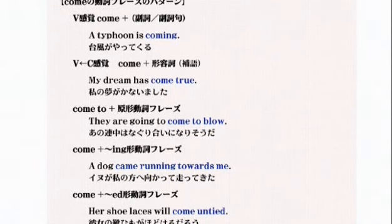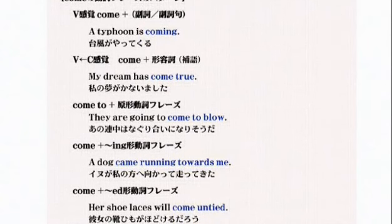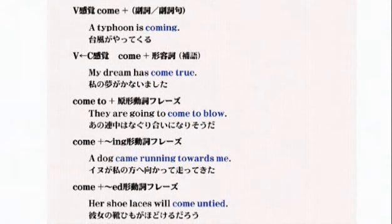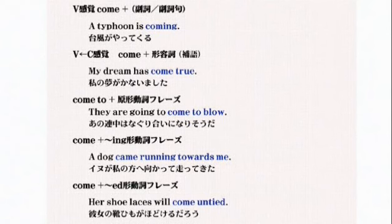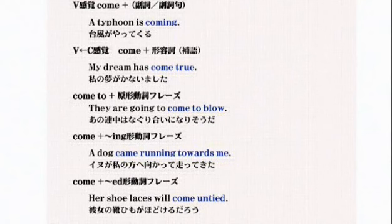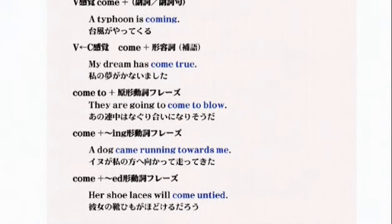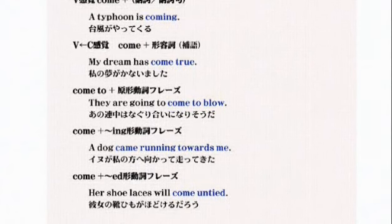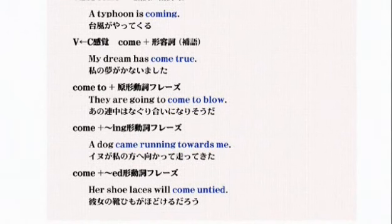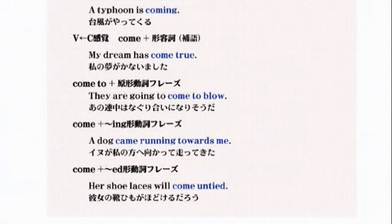comeの動詞フレーズのパターンを見ていただきましょう。come plus 副詞：「a typhoon is coming」現れてくる、やってくる。come plus 形容詞：「my dream has come true」私の夢が叶いました。「they are going to come to blows」殴り合いになりそうだということですね。「a dog came running toward me」犬が私の方へ向かって走ってきた。「come untied」靴の紐がほどけるということです。